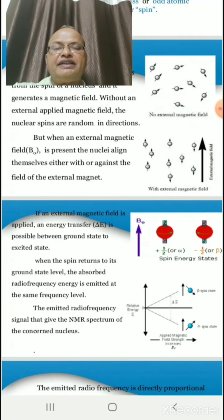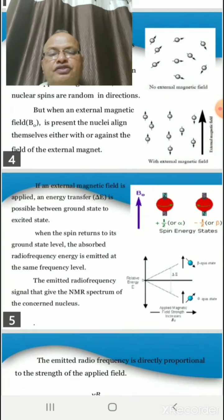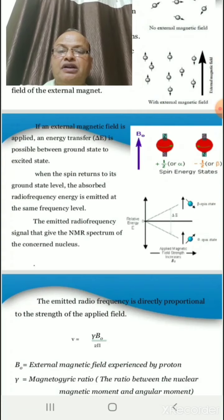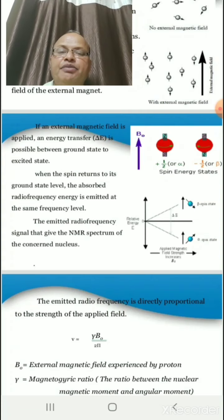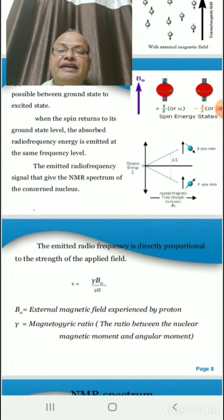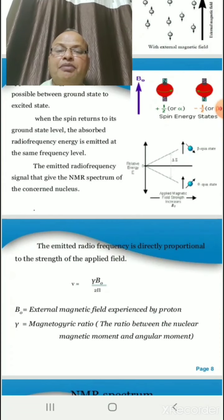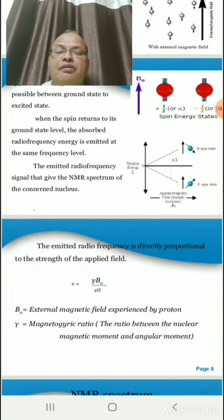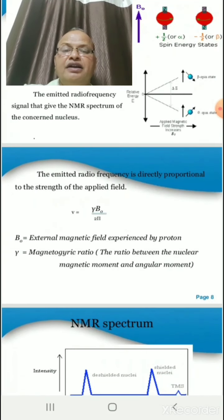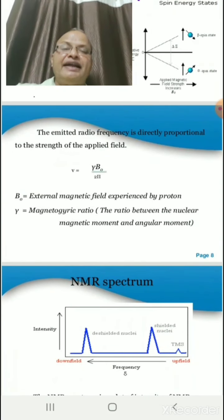It can also be explained by these examples. The emitted radiofrequency is directly proportional to the strength of the applied field, which can be denoted by V. B0 is the external magnetic field experienced by the proton.